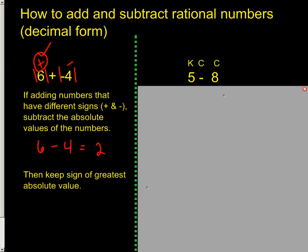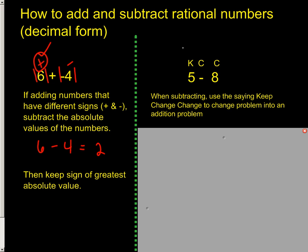Over here, when we look at subtraction, we're still going to use the keep change change saying. So we keep the sign of the first number, we change subtraction to addition, and then we change the sign of the second number: 5 plus negative 8. Now we're adding. That's the whole point of doing this KCC step, so that way you can change the subtraction problem into addition.